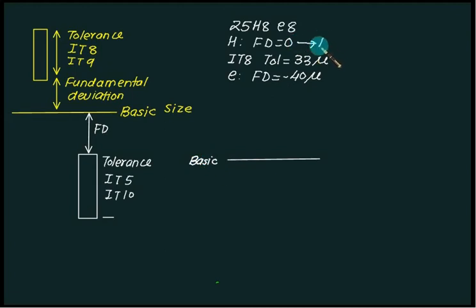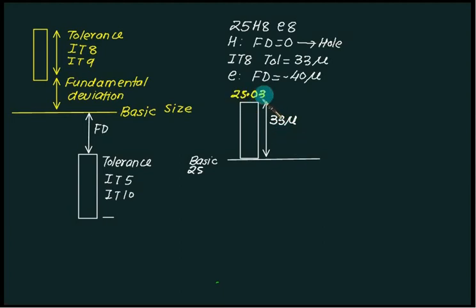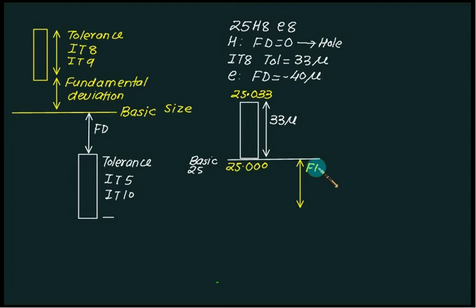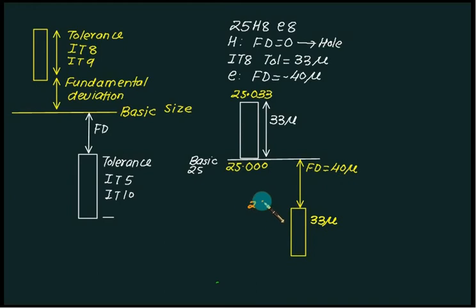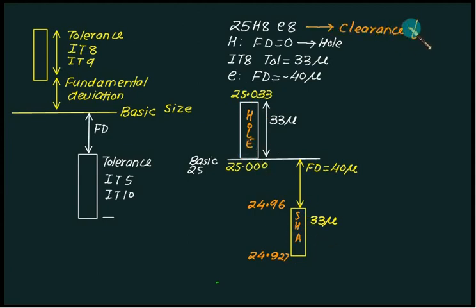For the hole, the fundamental deviation is 0, so it starts exactly above the basic size line. With tolerance of 33 microns, the maximum hole size is 25.033 mm and minimum is 25 mm. For the shaft, the fundamental deviation E is negative, so we go 40 microns downward below the basic size, and below that we construct the IT tolerance band of 33 microns. Maximum shaft size is 24.96 mm and minimum is 24.927 mm. Since the shaft size is always less than the hole, this represents a clearance fit.